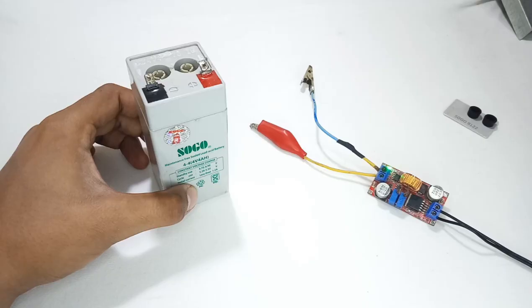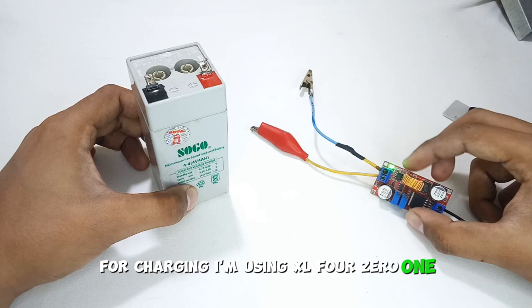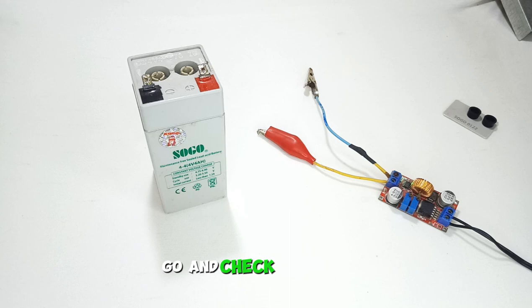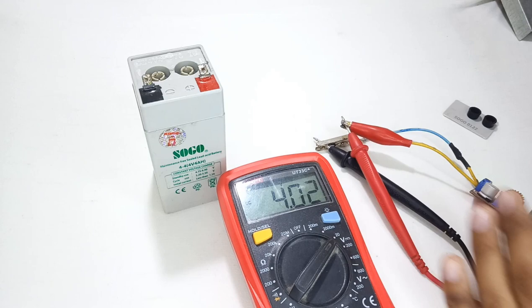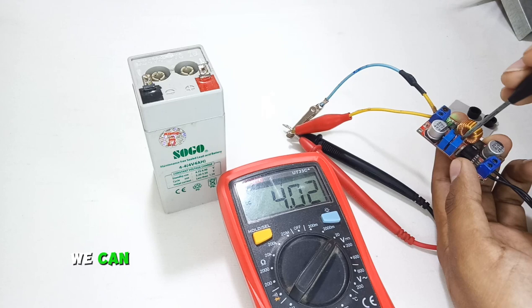Now charge the battery. For charging I am using XL4015 DC to DC step-down buck converter. I already made two to three videos on it. Go and check my channel, you will find its tutorial. So let's set the voltage to about 4.8 volts.